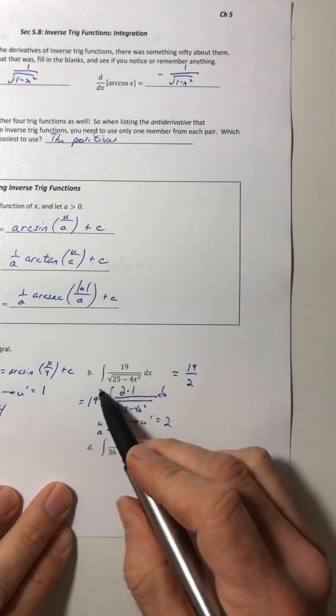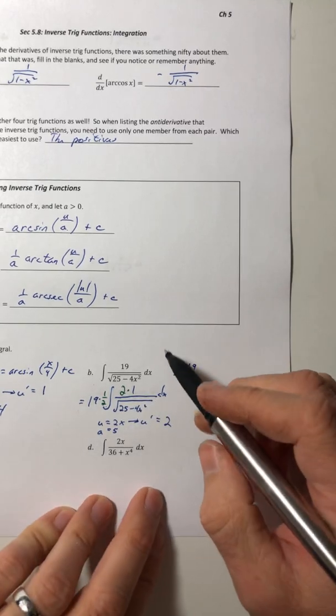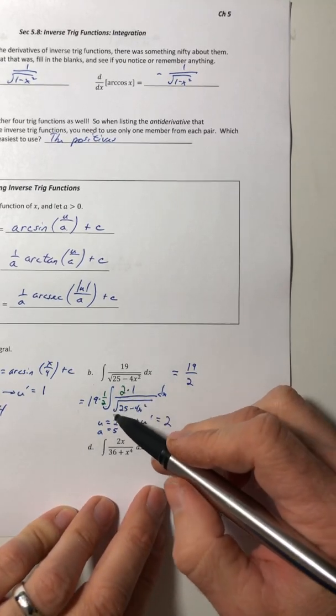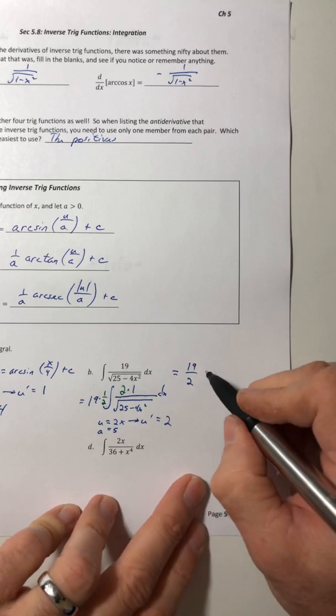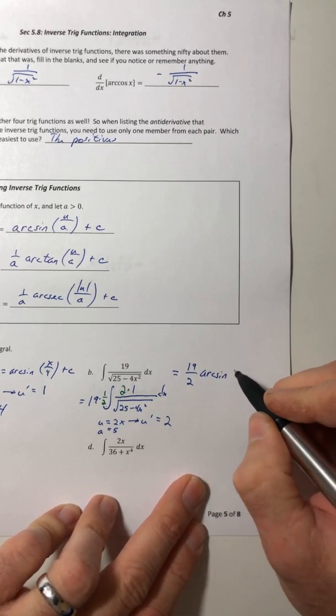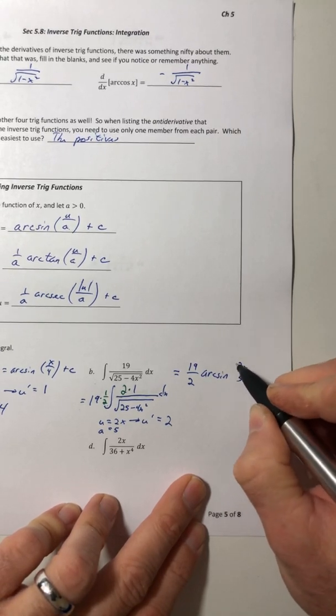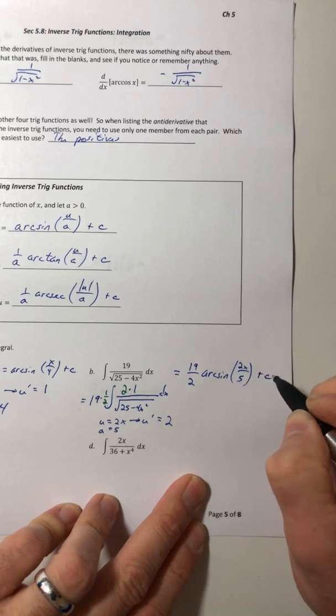And in this case, our a is 5. So the 19 over 2 is going to stay right out in front. And now I have the form I want. I have u prime over root a squared minus u squared. So that's arcsine of u over a.